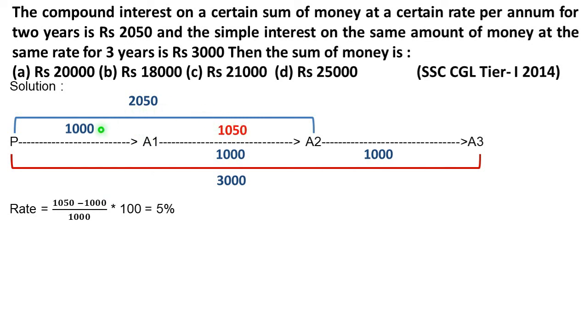So, 1050 minus 1000 upon 1000 into 100. 50 upon 10, then 5 percent. This is our rate of percentage, our rate of interest.